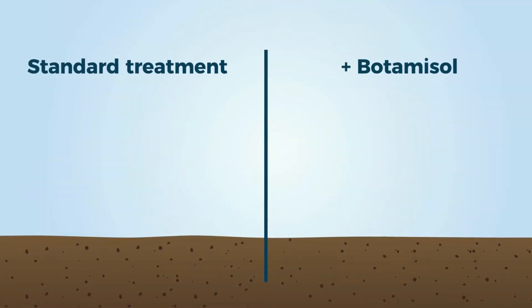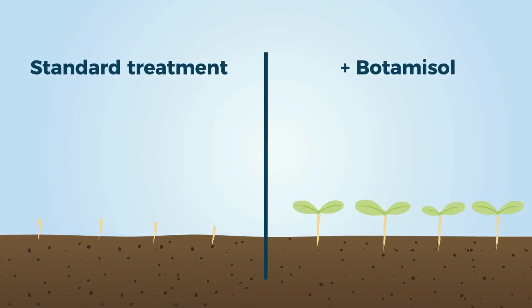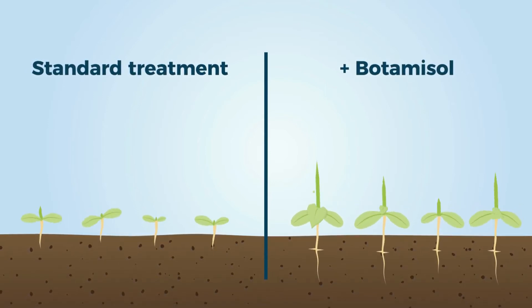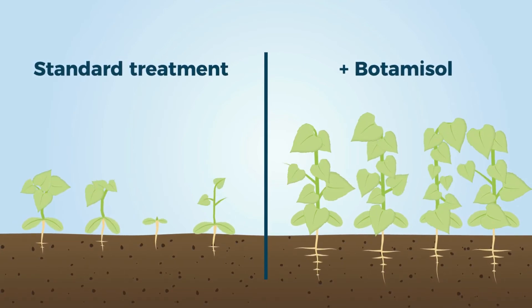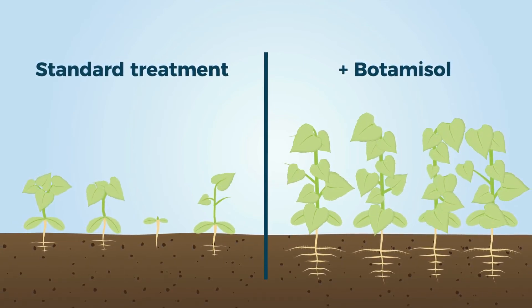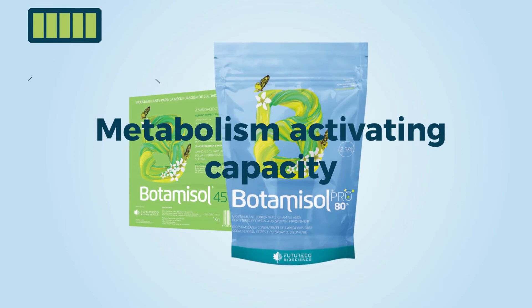Botamisole is especially efficient in shortening propagation phases, reducing post-transplant losses, and improving reproductive stages. Thanks to its metabolism-activating capacity, botamisole is also useful to increase efficacies of herbicide treatments.